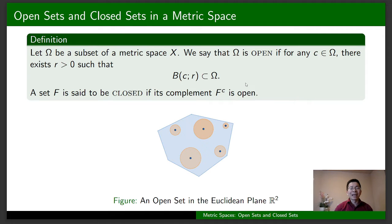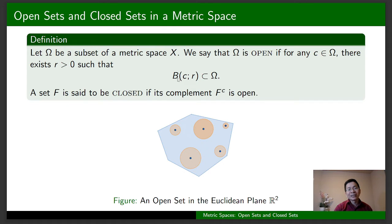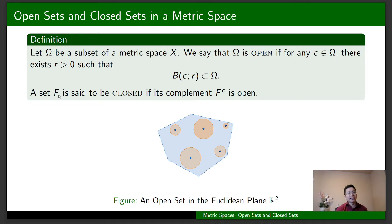People use open balls to define open sets in a metric space. Let Omega be a subset of a metric space. We say that Omega is open if, no matter what c in Omega we take, there is some positive real number r greater than zero such that the open ball with center c and radius r is a subset of Omega. A subset F of X is said to be closed if its complement is open.